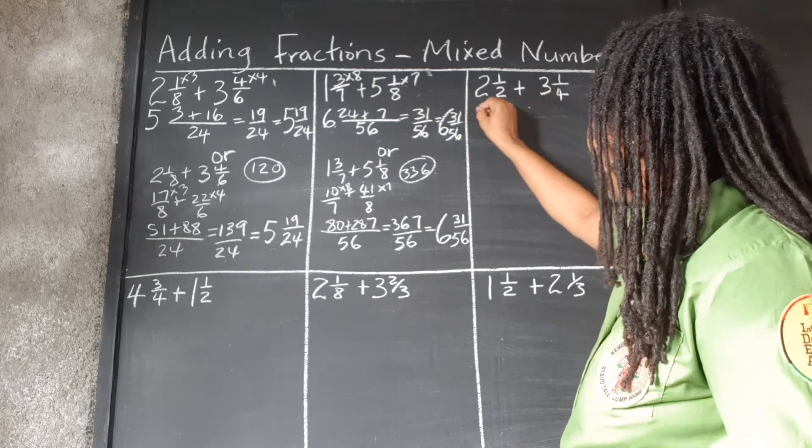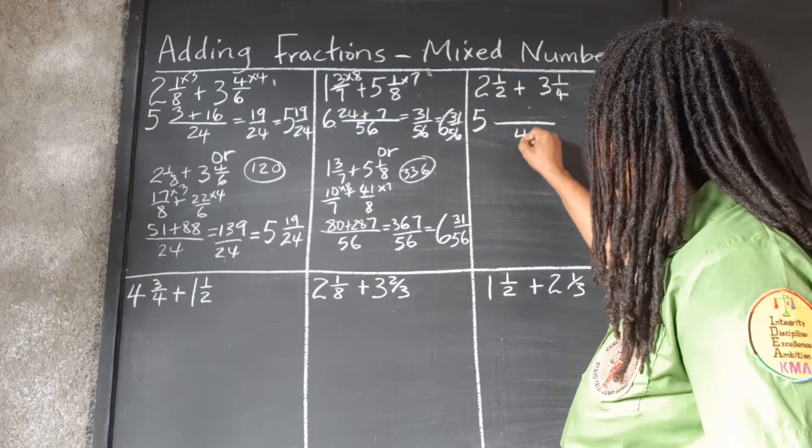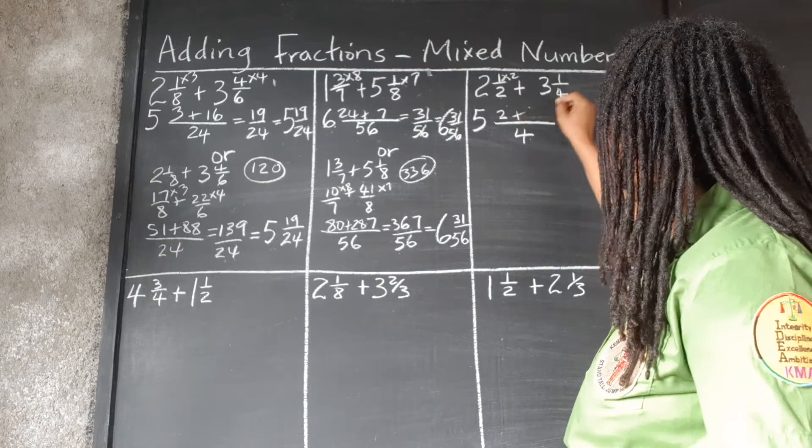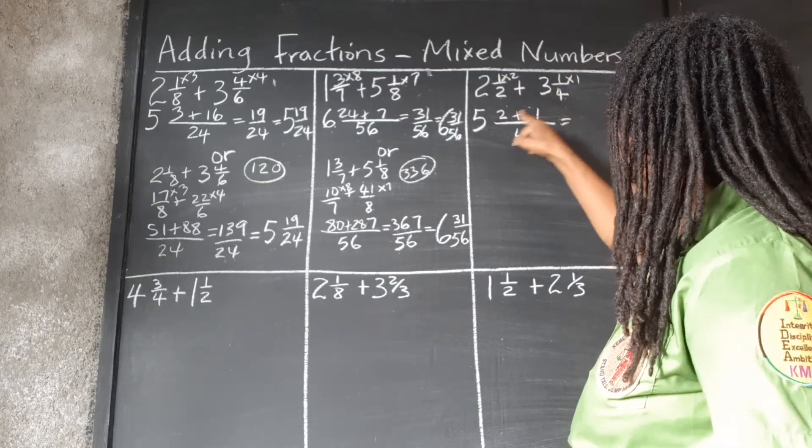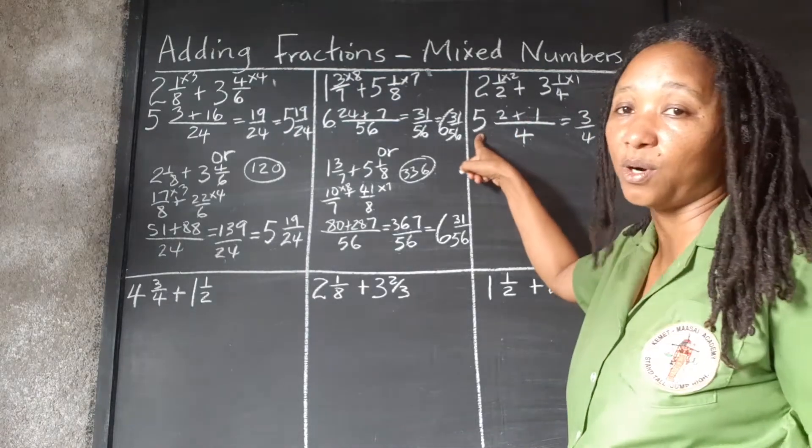So let's do this route. 2 plus 3, 5. LCM of 2 and 4 is 4. 2 goes into 4 2 times. 1 times 2, 2. 4 goes into 4 1 time. 1 time 1 is 1. 2 and 1, 3. Finally, we add our whole number here. 5¾.